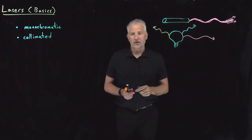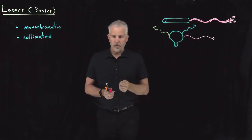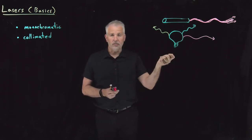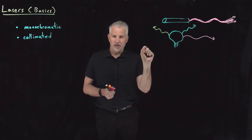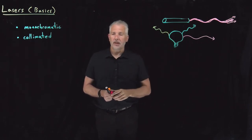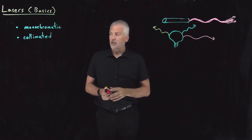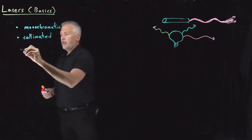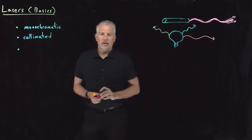As you know if you've ever played with a laser pointer, you can point at something a quarter mile or half a mile away and still see a tight laser beam spot — if it's a decent laser. The photons from the laser pointer are all pointing in the same direction and may only begin to diverge a little bit very far from the source.